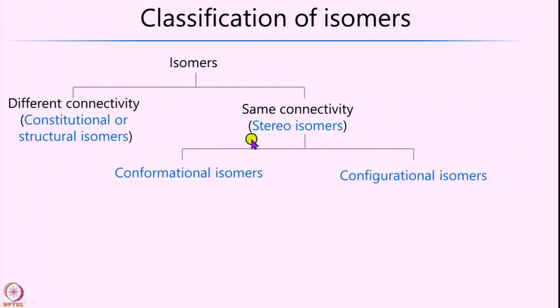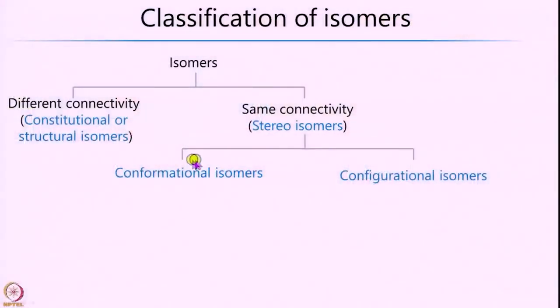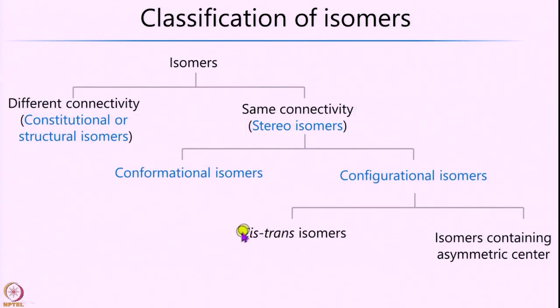The second category is called stereoisomers, where the connectivity remains the same but the way atoms are arranged in space is different. Stereoisomers can be further classified into two categories: conformational isomers and configurational isomers. Conformational isomers do not involve any bond making or bond breaking, whereas to go from one configurational isomer to another, one has to break a bond. Configurational isomers can be further subdivided into cis-trans isomers and isomers containing an asymmetric carbon.